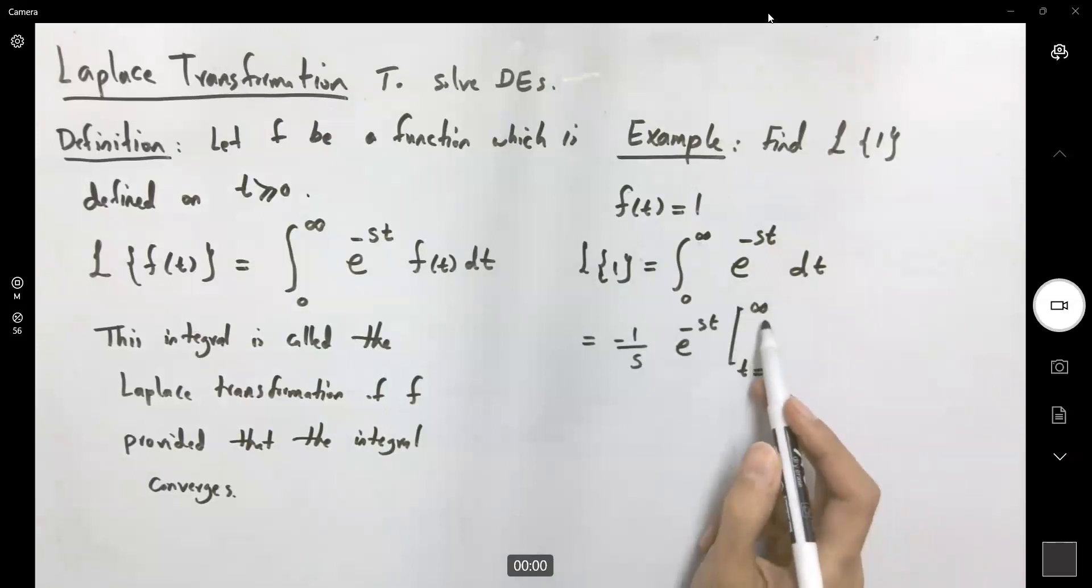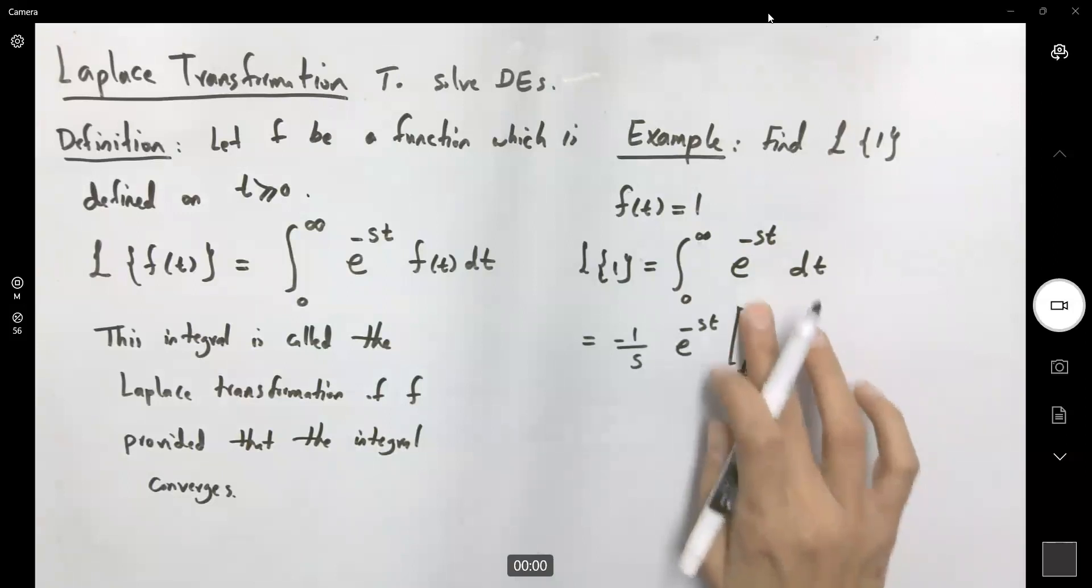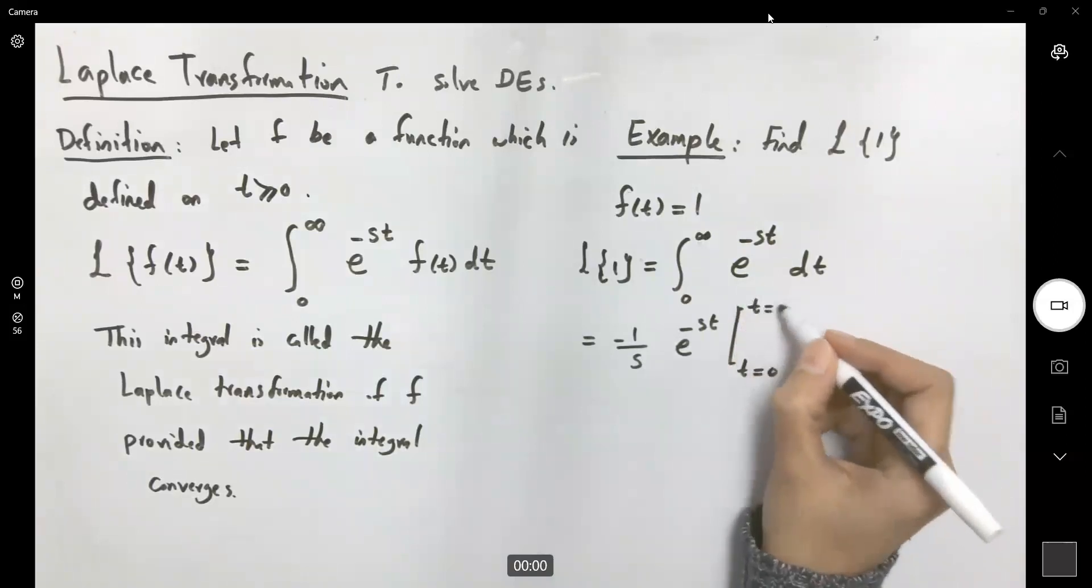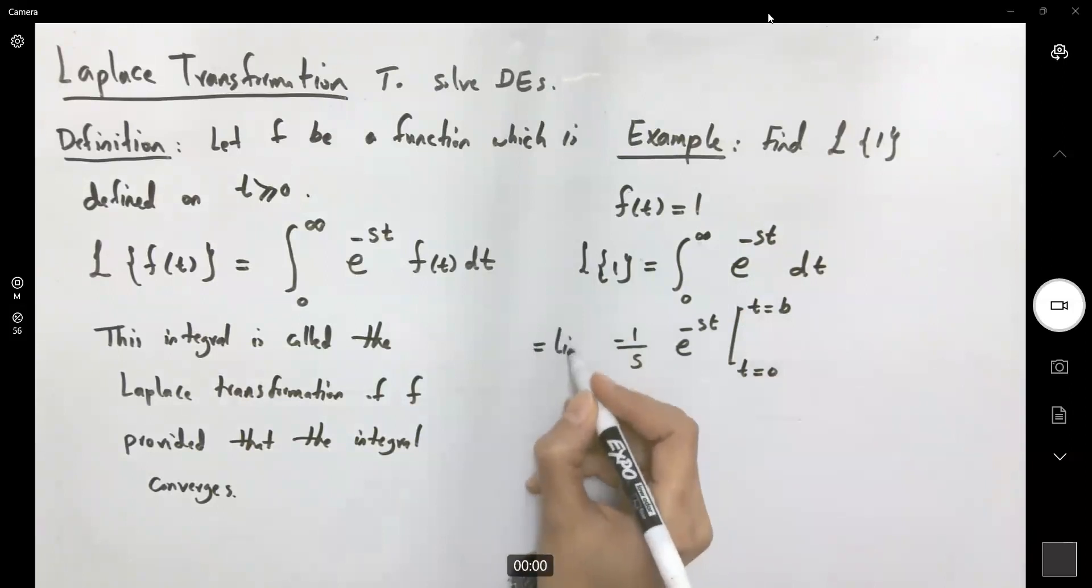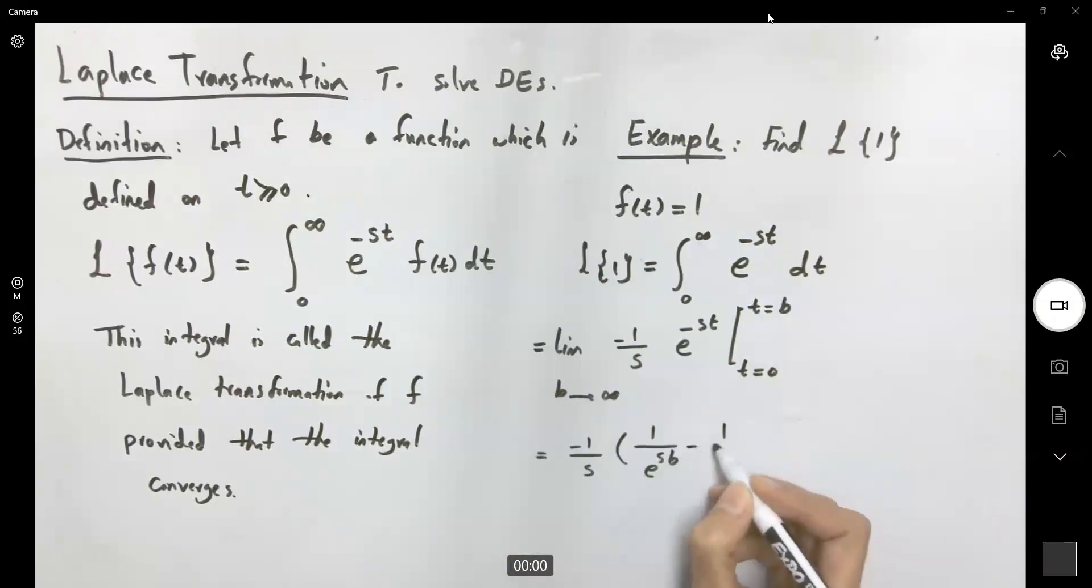You could also write this as a limit. You can write this as, for example, t equals to b, and then take the limit as b approaches infinity. So this becomes negative one over s, one over e to power sb minus one divided by e to power s times zero.